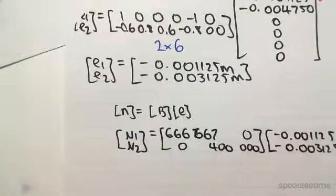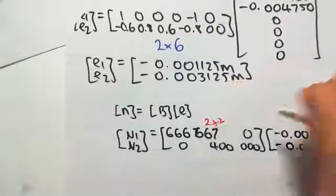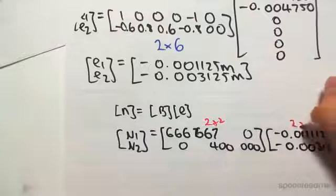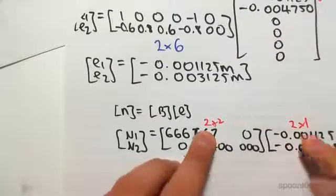So we're just going to multiply this out. So this is a 2 by 2 and a 2 by 1, which means they're compatible, and we're going to be left with a 2 by 1 matrix.